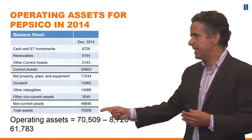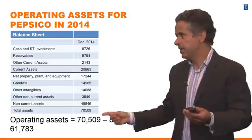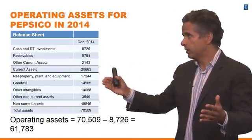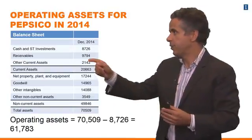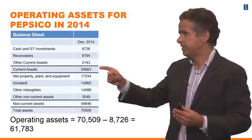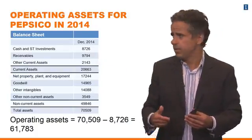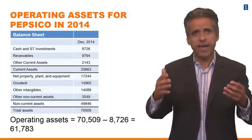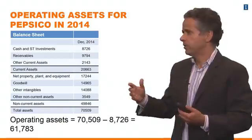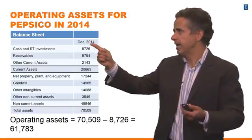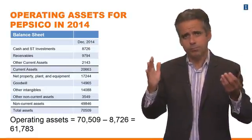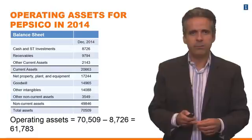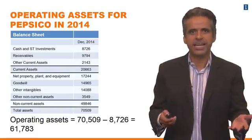Operating assets are very easy to compute — just take the total assets and deduct cash. Our estimate here is $62 billion. Our assumption is that all other current assets are invested in the business. Going over the list: receivables is an investment in the business, net PPE, goodwill — which comes from the effect of previous acquisitions on the balance sheet — and intangibles. Most of these assets are actually invested in the business, except for cash, which is most likely invested in financial assets like bank deposits and treasury bonds. That's why we use $62 billion instead of $70 billion to estimate operating assets for PepsiCo.